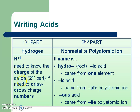We need to focus on the anion — the second part of the name — in order to know if we have to crisscross our numbers. The second part of the acid name could be one of two things: it's going to be a non-metal, or it's going to be a polyatomic ion. If the acid name is hydro, root of a non-metal, ic acid, it came from one element. If the ending is ic, it came from a polyatomic ion ending in ate, and an ous acid comes from a polyatomic ion ending in ite.